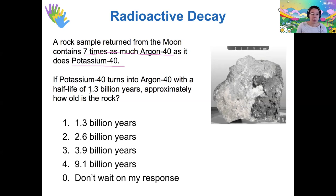And the half-life of potassium-40 is 1.3 billion years. So I want to walk through this one so that you have an example with which to do the homework. So if I have seven times as much argon-40 as I do potassium-40, then that means I have seven parts argon and one part potassium.